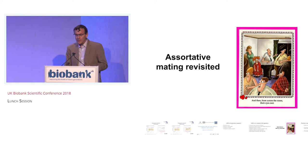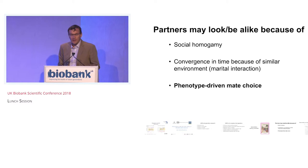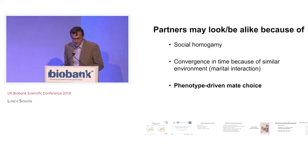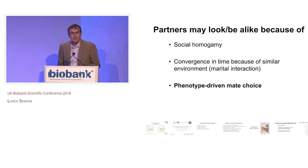So why may partners look alike? There are a number of possible explanations. One is social stratification in the population — you tend to meet your spouse in the same culture or social setting. Another is convergence over time after you've been together for a long time, for example by having a shared diet. The one I'm particularly interested in is that spouses are alike because they were attracted to each other in the first place because of their phenotypic similarity.